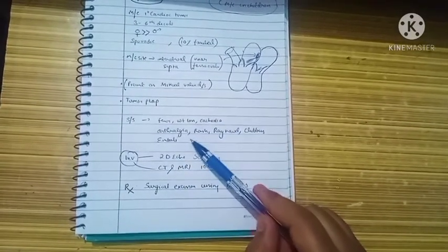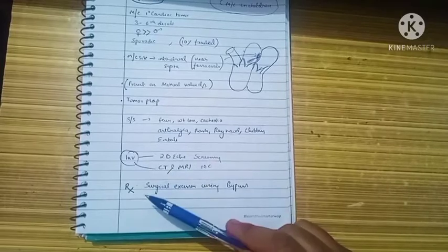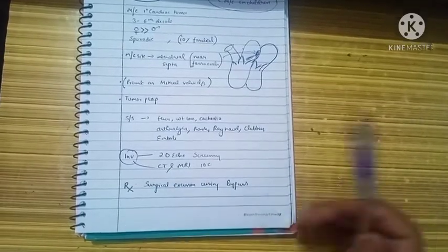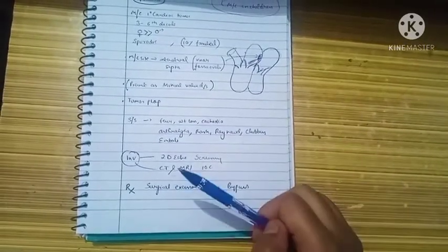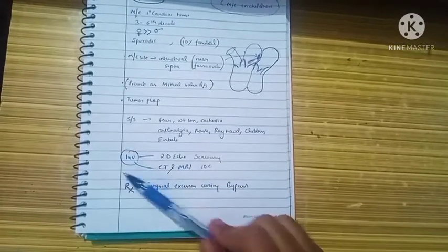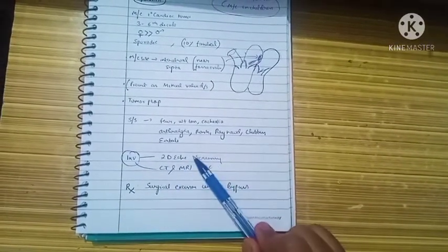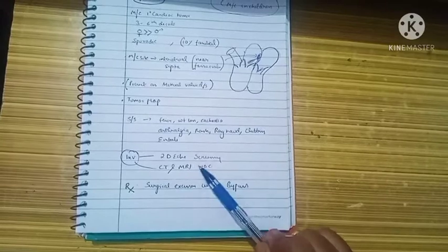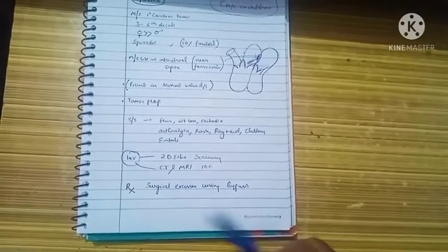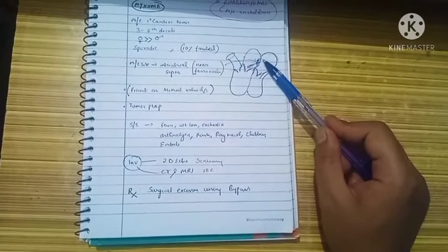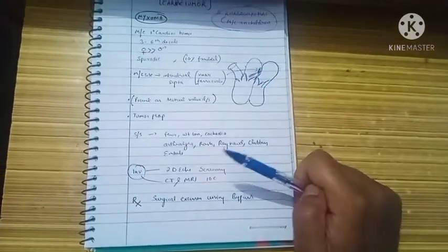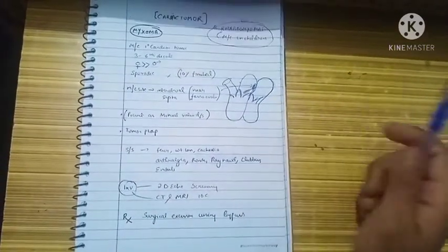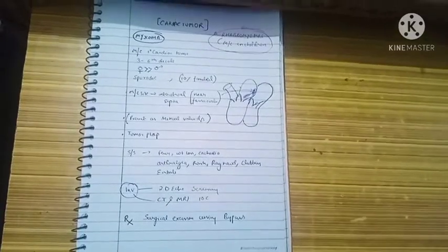Also we see arthralgia, rashes, Raynaud phenomenon, and clubbing, and emboli may be formed that may be fatal. On investigation, the screening test is 2D echo and the investigation of choice is CT and MRI. The treatment is to surgically excise out this tumor. So this is what you needed to know about myxoma. Thanks for watching.